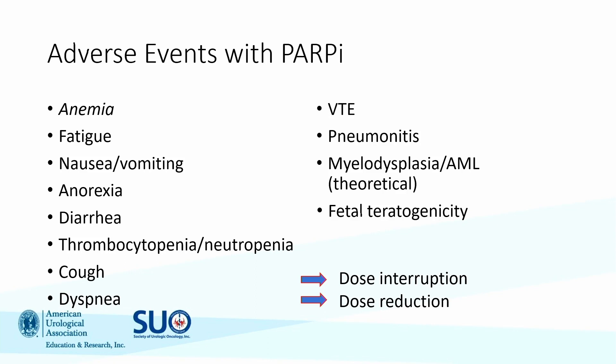Other common side effects include fatigue, GI symptoms — nausea, vomiting, diarrhea, anorexia. Less commonly but importantly: venous thromboembolism, pneumonitis, and myelodysplastic syndrome, which should be on your differential when evaluating these patients. For management: if the PARP appears to be working, you don't want to stop and switch therapy. Interrupting the dose, holding off, treating symptoms, and then restarting at a lower dose to ensure tolerability is what is commonly done in practice.